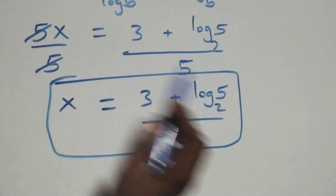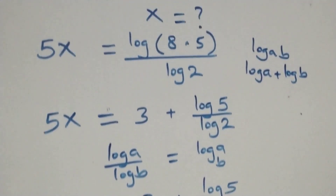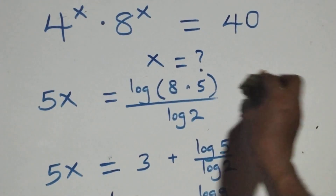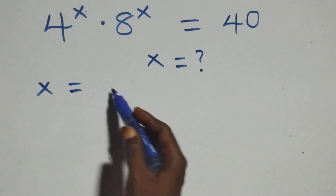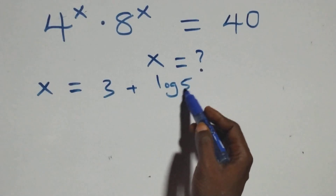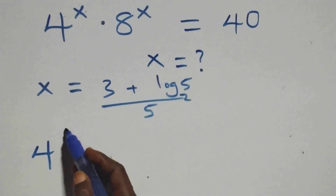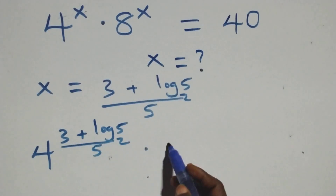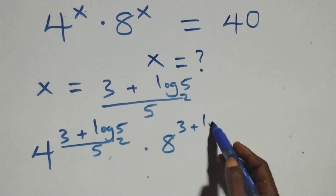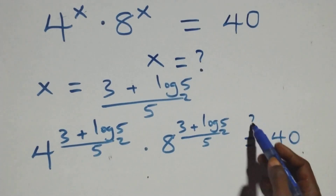We have x equals (3 plus log₂5) over 5. Let's check by substituting the value of x back into the given problem. We substitute x = (3 plus log₂5)/5 into 4 raised to power x times 8 raised to power x equals 40.